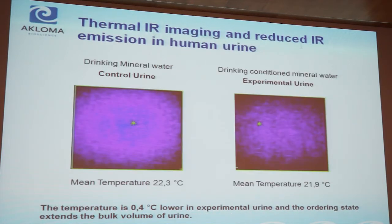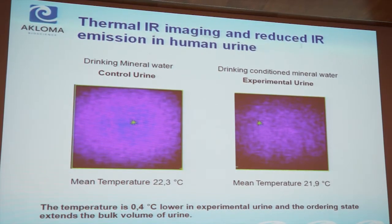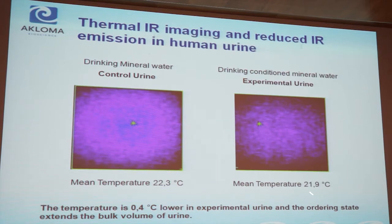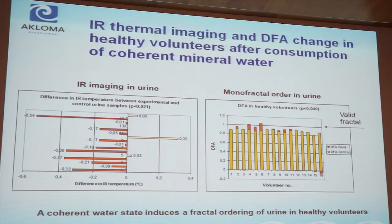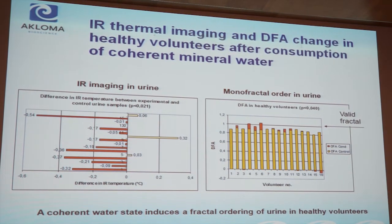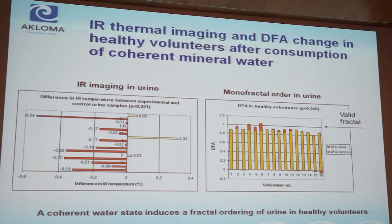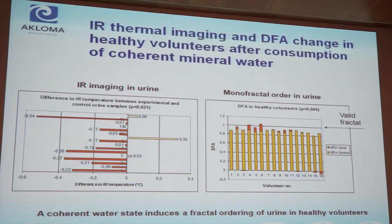With this as a lead, we decided to do studies on 15 healthy individuals drinking ordinary mineral water or conditioned mineral water. Here are two images from one of those individuals. The mean temperature was 22.3 and 21.9 — a decreasing temperature of 0.4 degrees centigrade — and you can also see the shift in fractality between the two images. When we looked at all individuals first according to surface temperature of urine, we found a significant decrease in urine temperature in these individuals.